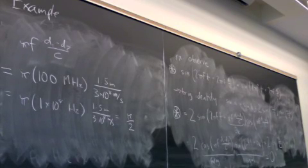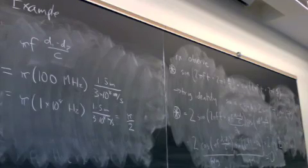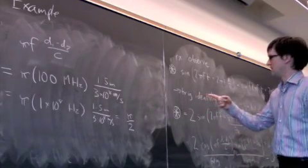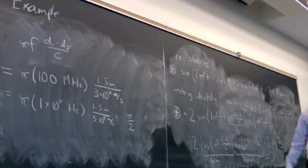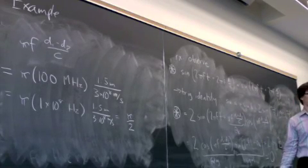So fading squashed the signal because the two legs of the signal, D1 and D2, were exactly half a wavelength apart.